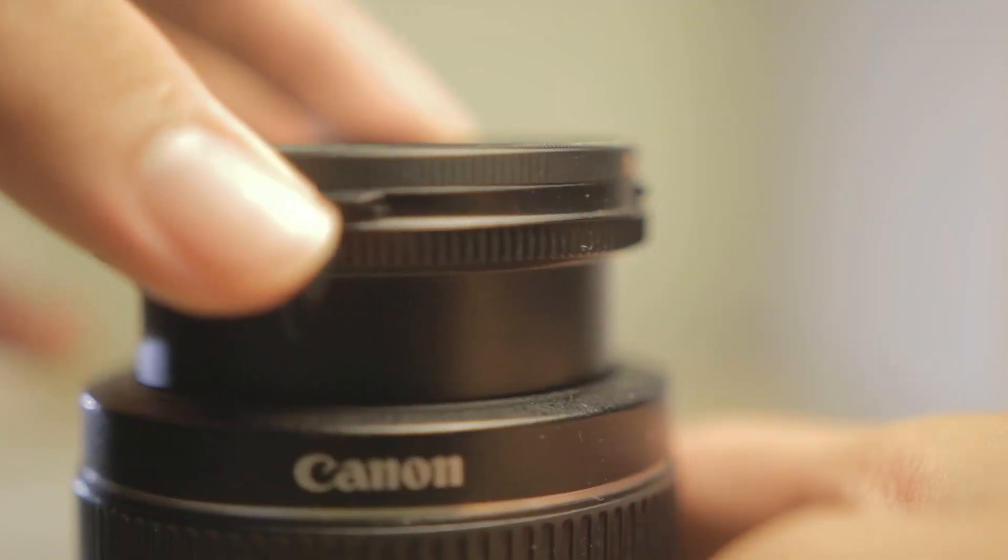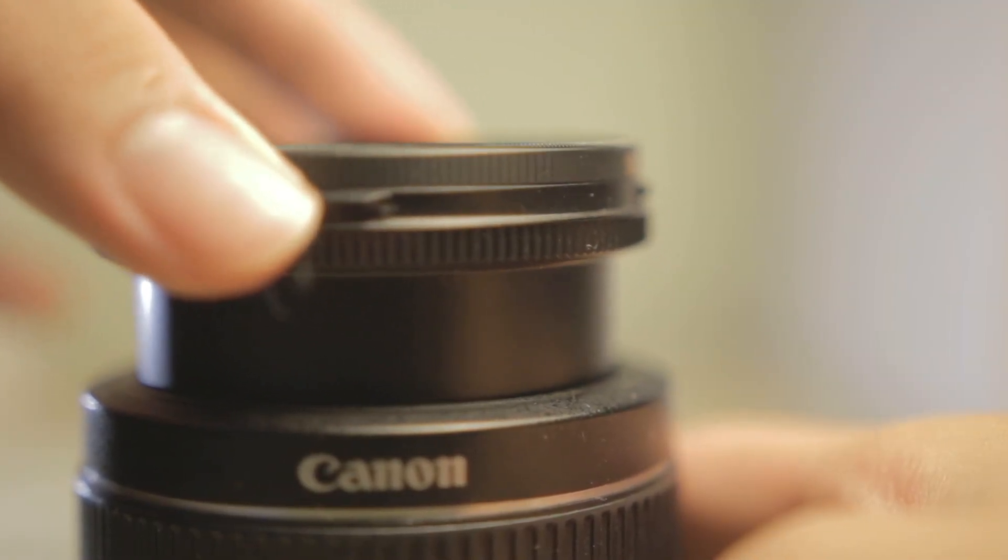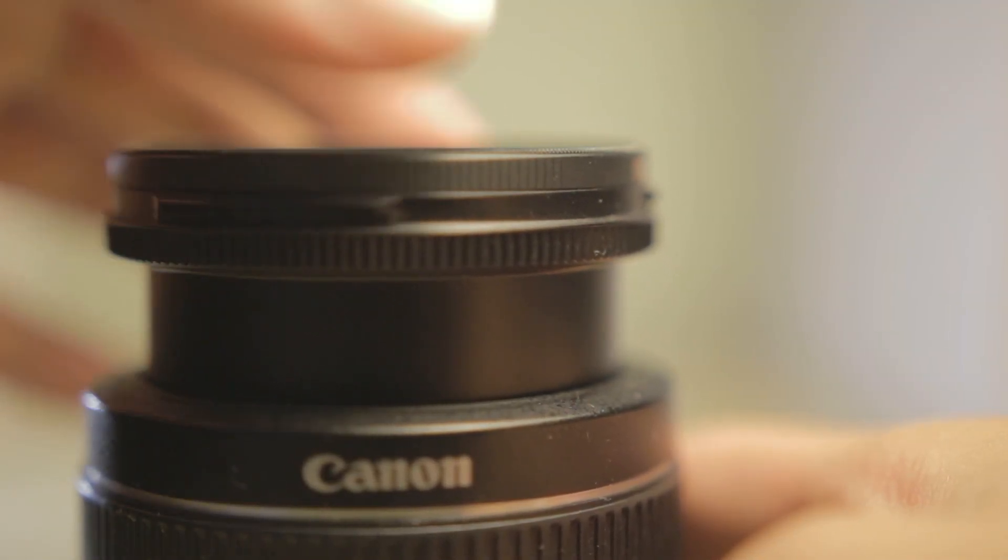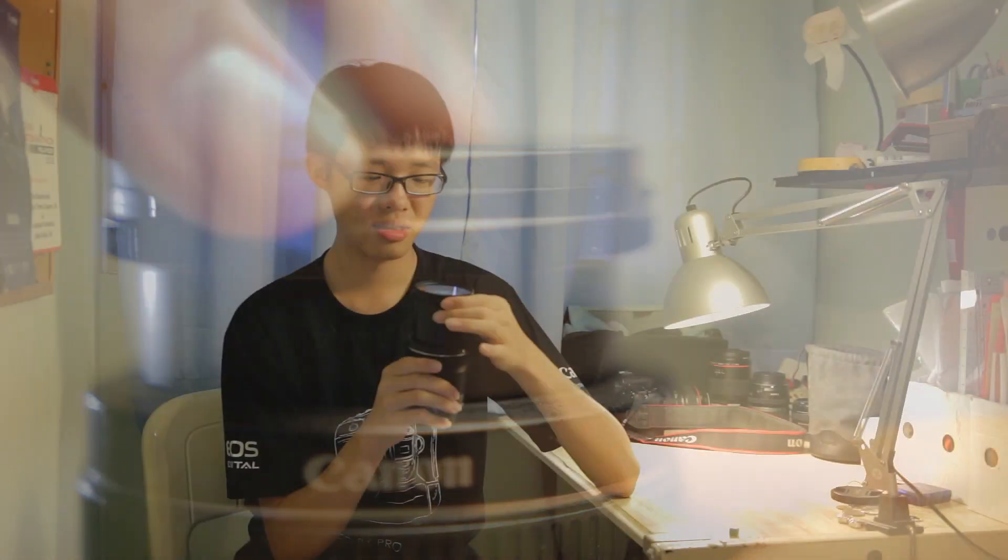The 18-55 feels kind of wobbly when you rattle it. The 18-135 is just sort of less rattly. But the build quality is still not top-notch. Neither of these lenses have weather sealing, so they are both just so-so. We can say that they are really just mediocre.